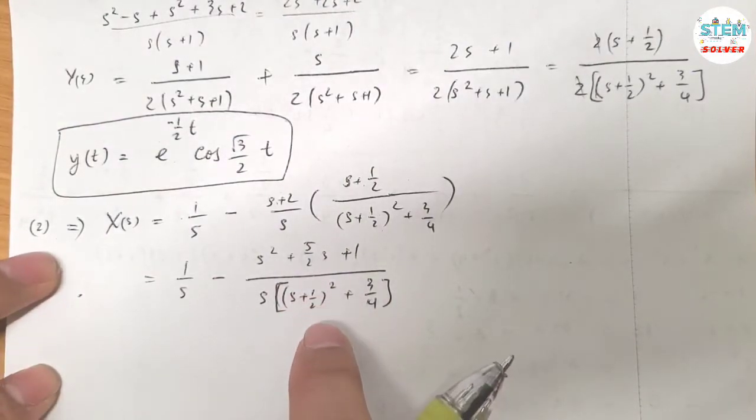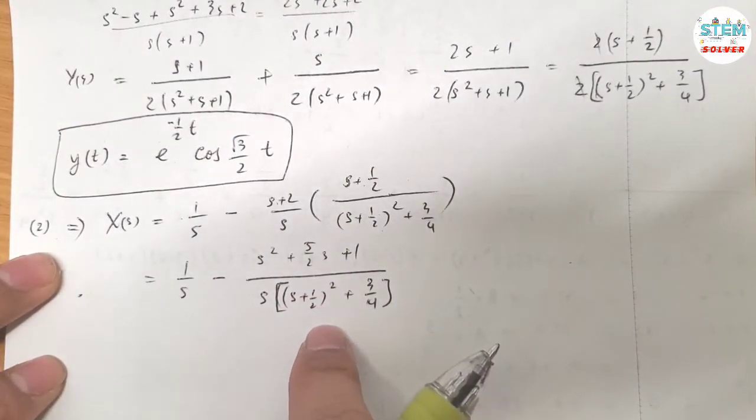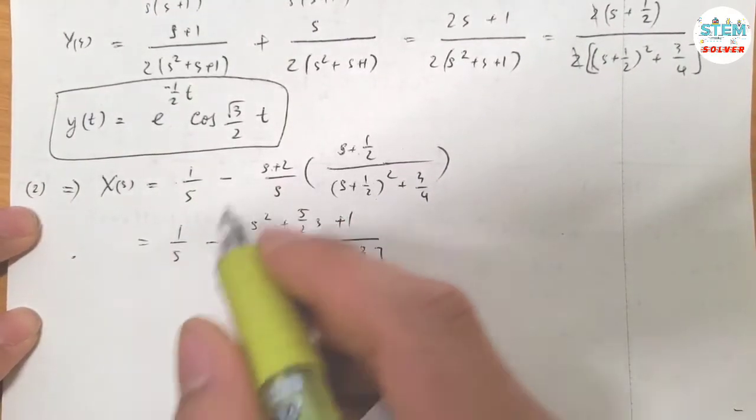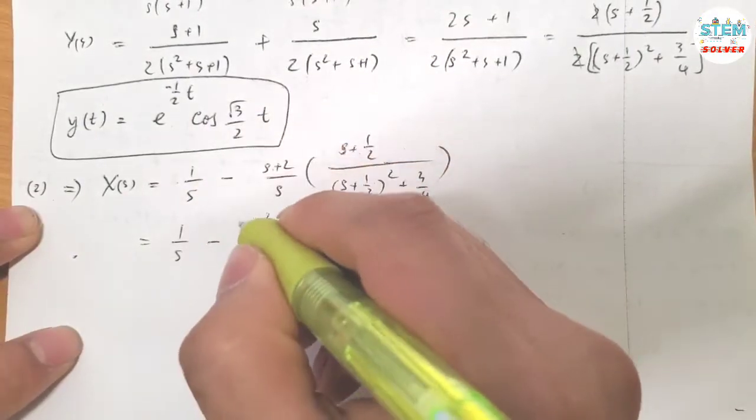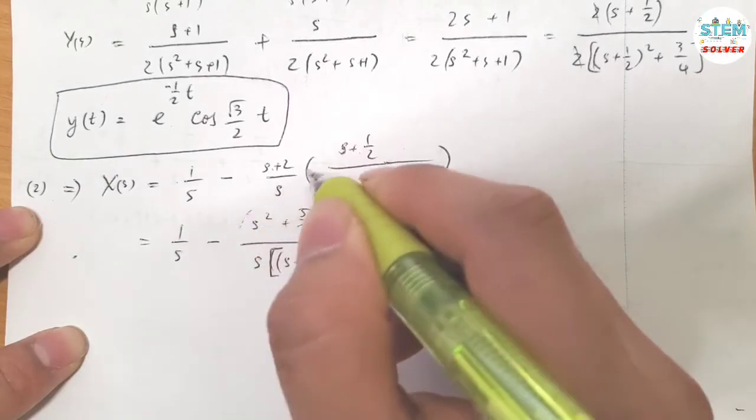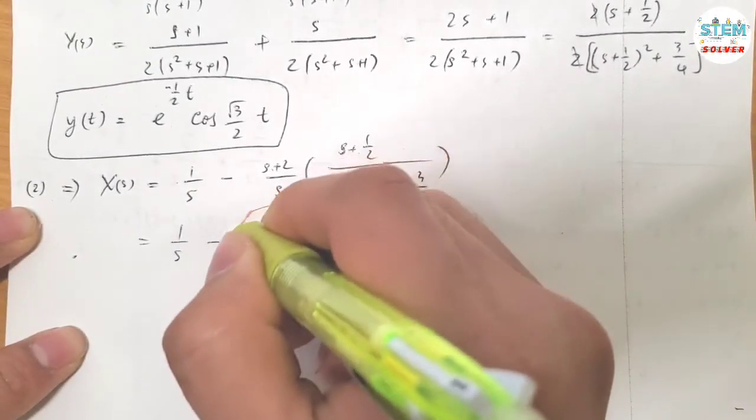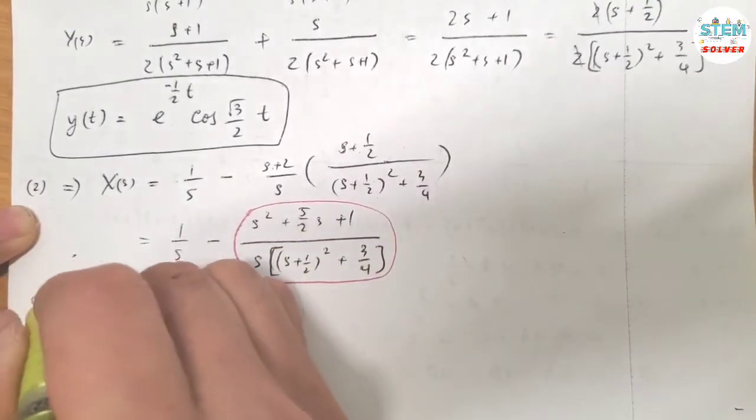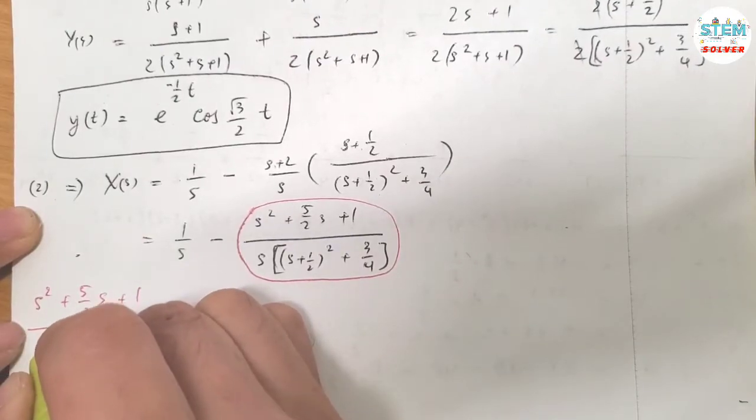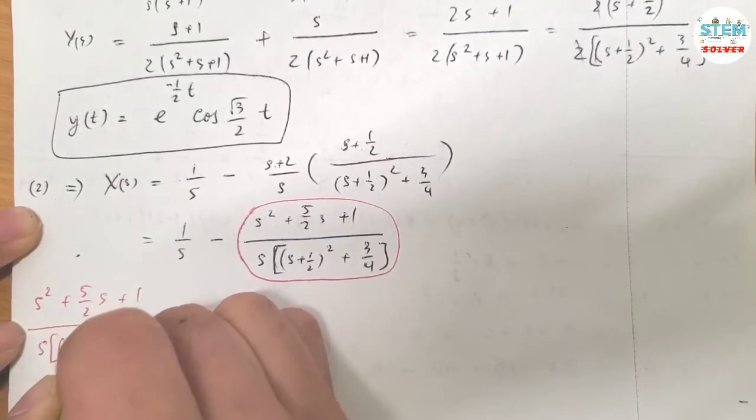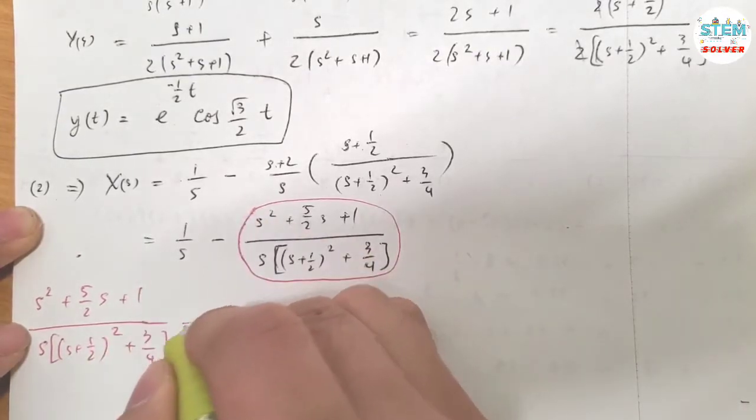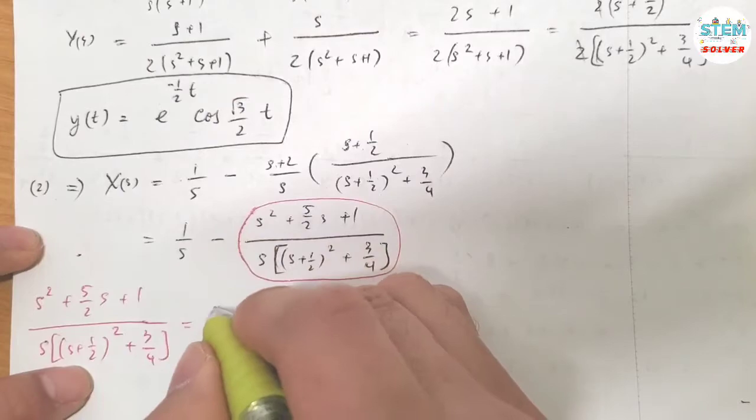Now for this one, you're definitely gonna use the partial fraction decomposition method. Although I don't like that method, but I have to use it because there's no other way to go. Let me use a different color here. Just forget that there is S for now. Since you already know how to use partial fraction decomposition method to resolve this one, I'm not gonna go over for the sake of saving time.